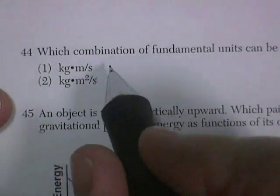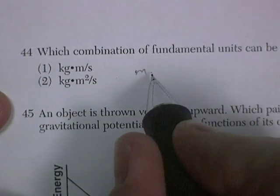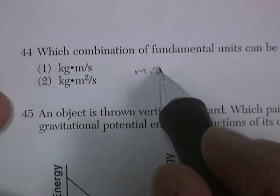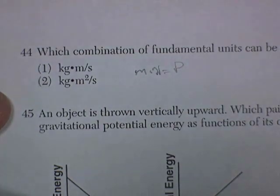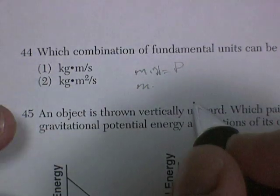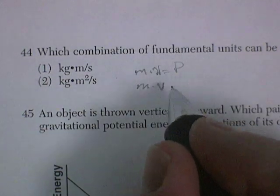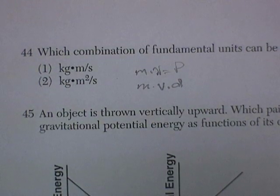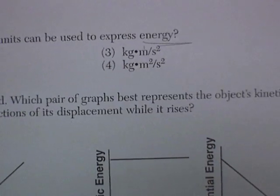Let's look at the first one. Kilograms is mass, meters per second is velocity. That would be momentum. Kilogram mass times velocity, meters per second, times distance. MVD. I don't know what that is. Momentum times distance.